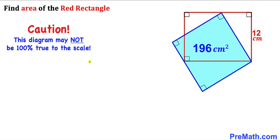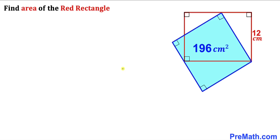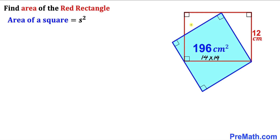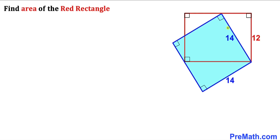Note that this figure may not be 100% true to scale. Let's get started with the solution. Our very first step: let's focus on the blue square. We know the area of a square is s², where s is the side length. Since the area is 196, and 196 = 14 × 14, the side length must be 14 cm across the board.